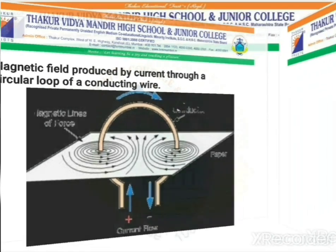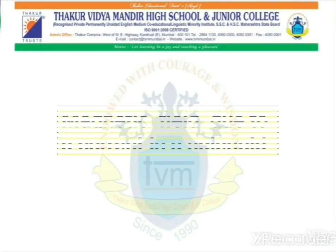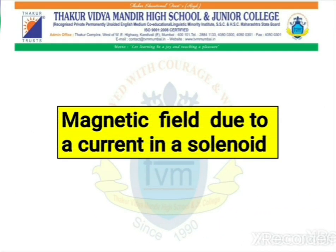Next we have the magnetic field due to a current in a solenoid. When a copper wire with an insulating coating is wound in a chain of loops, it is called a solenoid. How the magnetic field is formed due to a current in a solenoid can be understood easily with the help of this video.